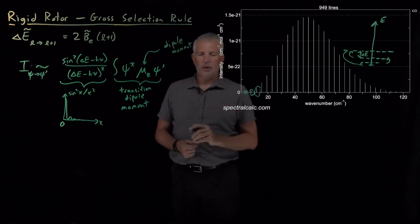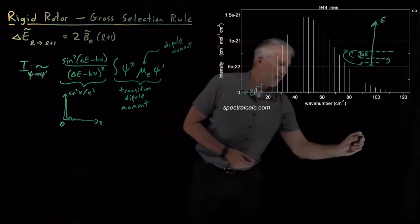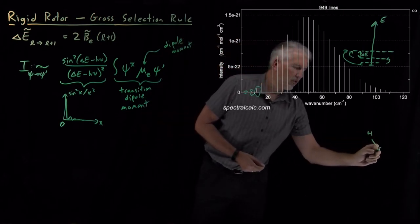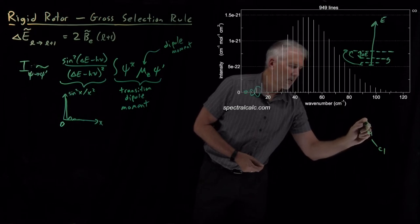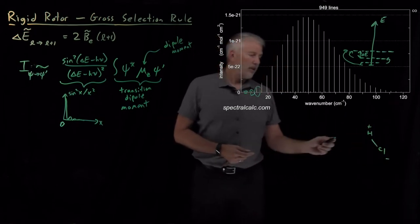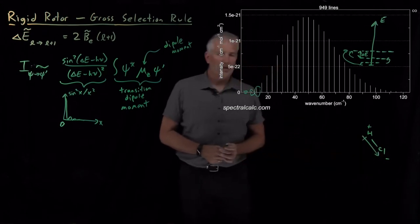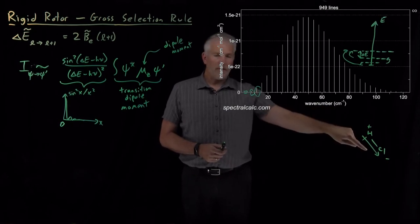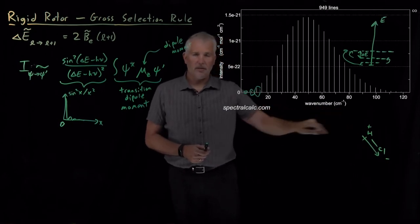So this is the dipole moment of the molecule. Dipole moment would normally be a vector. If I have a molecule like HCl that has a positive charge on one end and a negative charge on the other end, there's a dipole moment associated with that vector. Chemists tend to draw that vector from positive to negative. So the dipole moment of that vector has some direction, it also has some magnitude.